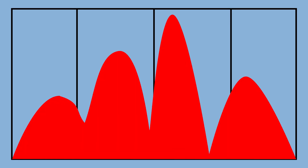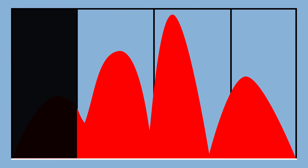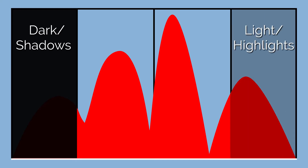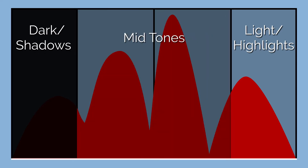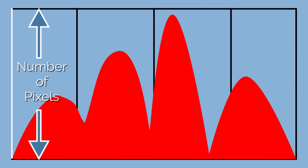So what the heck is a histogram? A histogram is a digital representation of the brightness values in any particular image. It's quite simply a graph of your exposure. On the horizontal axis it shows pixel brightness — on the left are your dark areas or shadows, on the right are the lighter areas or highlights, and in the middle section are the midtones. The vertical axis shows the number of pixels within those different brightness areas across your image.